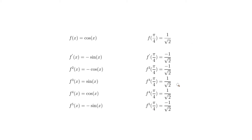The second derivative is −cosine, giving −1/√2 at π/4. The third derivative is sine of x, and sine(π/4) = 1/√2, so the third derivative evaluated at π/4 is +1/√2.